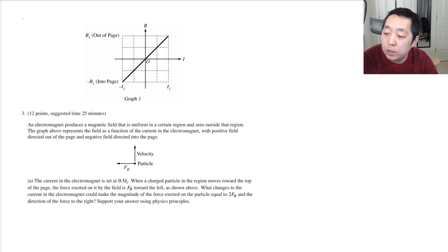An electromagnet produces a magnetic field that is uniform in a certain region and zero outside that region. The graph represents the field as a function of the current in the electromagnet, with positive field direction out of the page and negative field directed into the page.